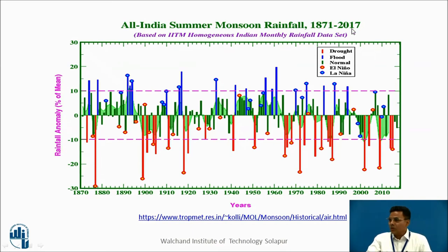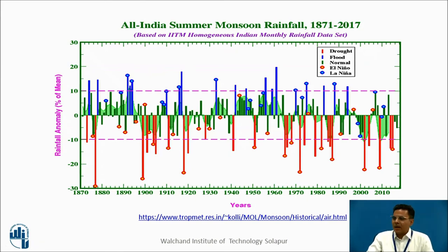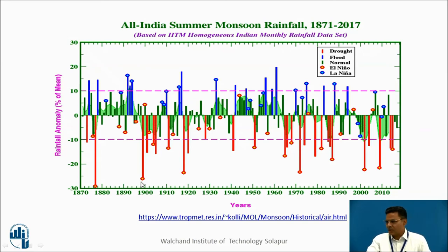This figure gives us the all-India summer monsoon rainfall from 1871 to 2017. Bars above the average line show rainfall above average, and bars below it show rainfall below average. Red bars indicate drought situations, while blue bars indicate flood situations. Droughts are associated with El Niño events, and floods are associated with La Niña events.